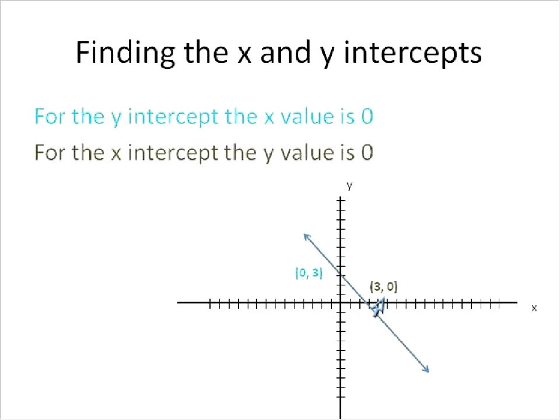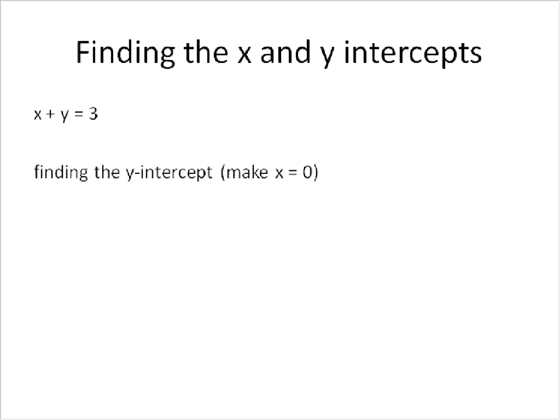And every single time it crosses the x axis, the y value will be equal to 0. You see that right here. This is the point 3, 0. It crosses the x axis. So the y value is equal to 0. So that's what we're going to use. We're going to use that information to help us find these points where they actually cross the axis.